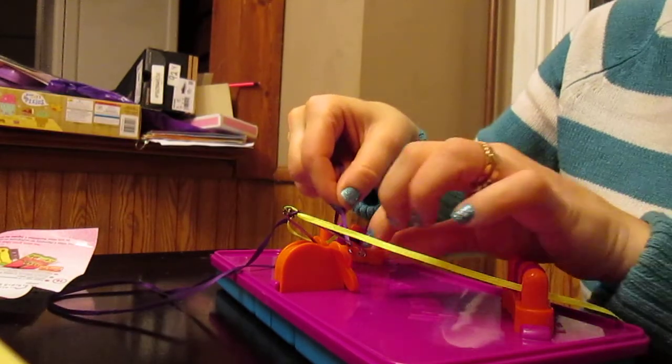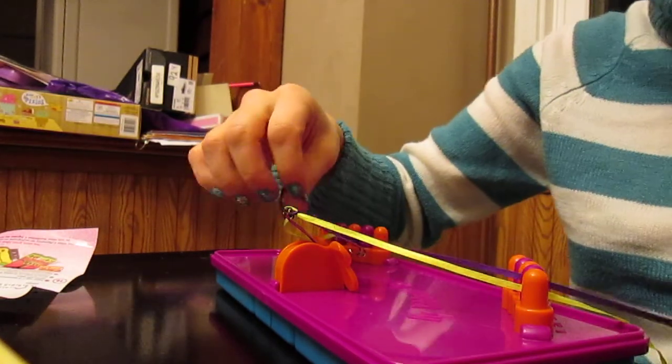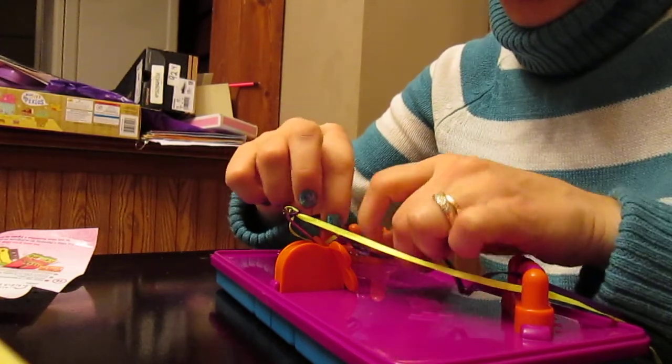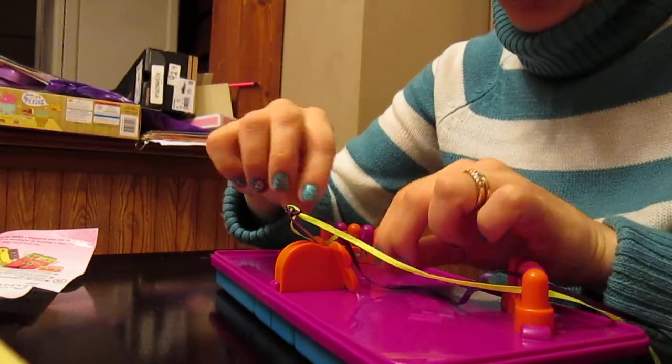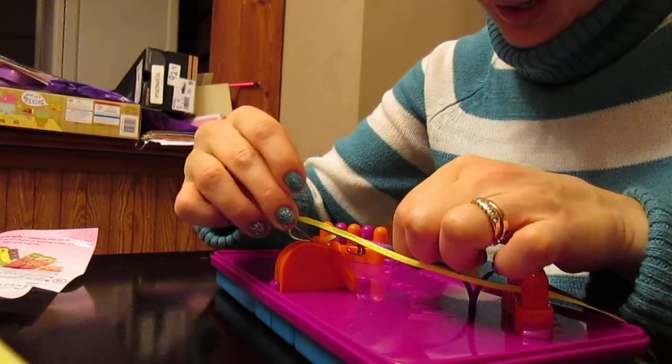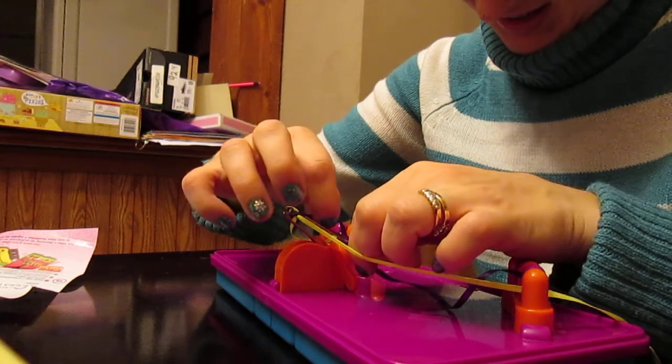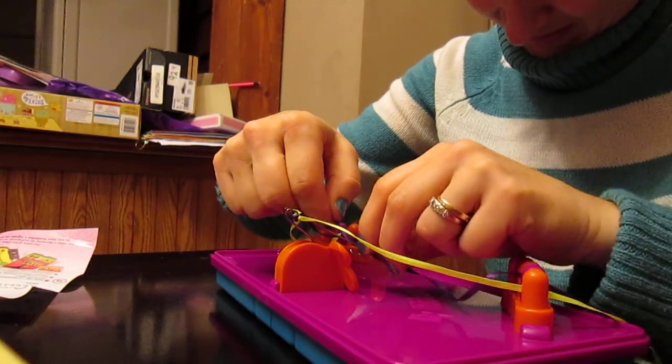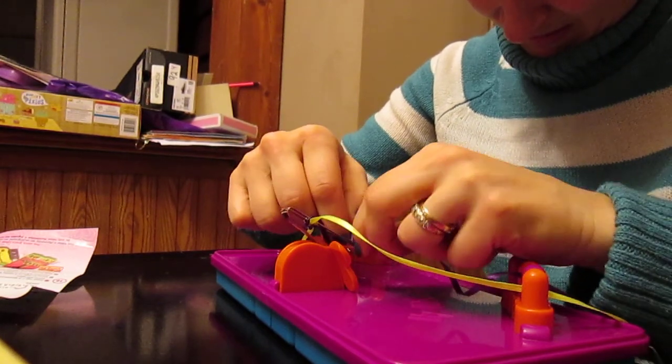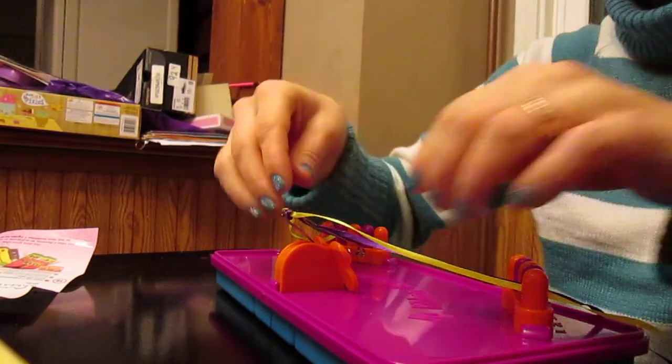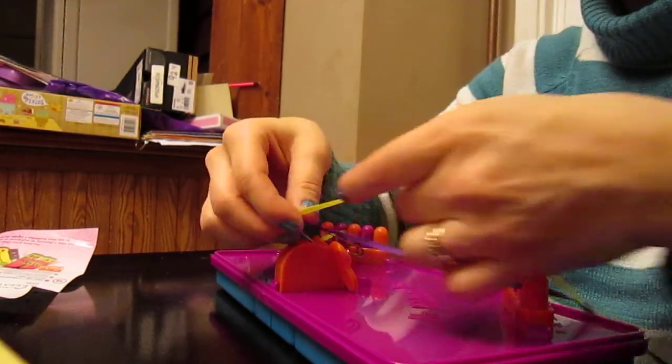So I'm taking the other purple one and going across. You want to make sure that if they twist up as you're bringing them through that you untwist them so that they lie flat on the barrette. There we go. See now I've done the two purple.